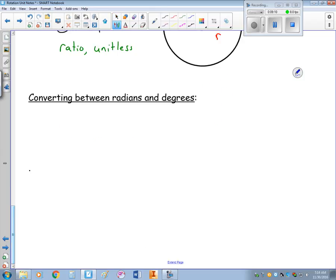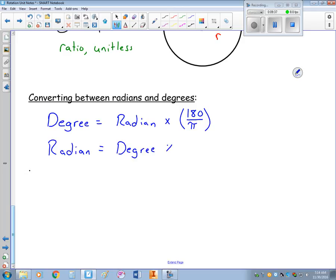One final thing. We can convert between degrees and radians. If I want to know what the degrees is, I would take the radian and times it by 180 over pi. And then I could get the radian by taking the degree and multiplying it by pi over 180.